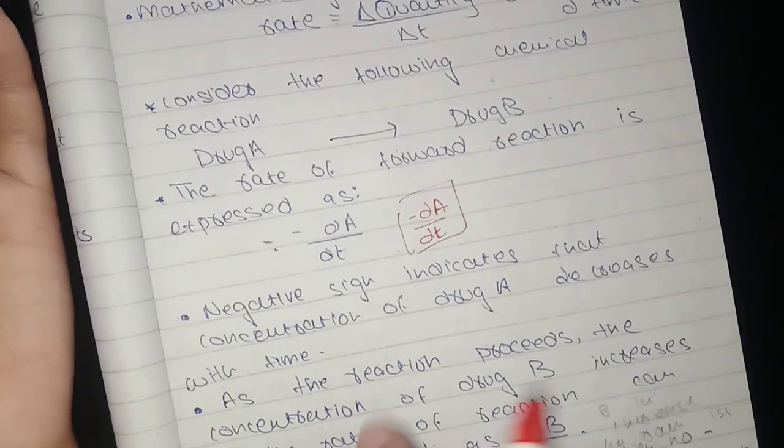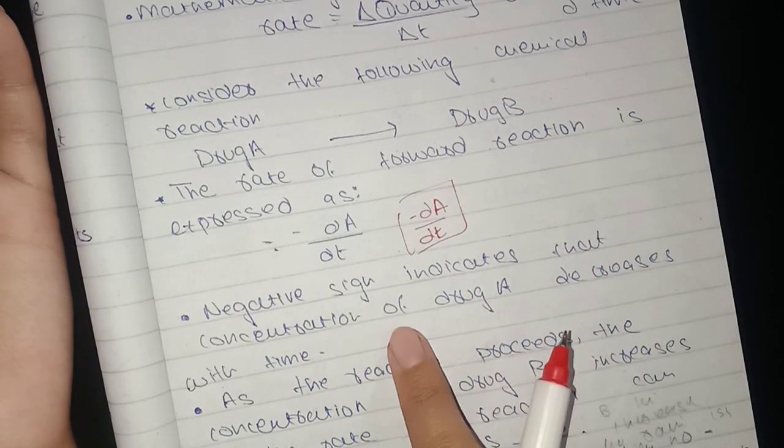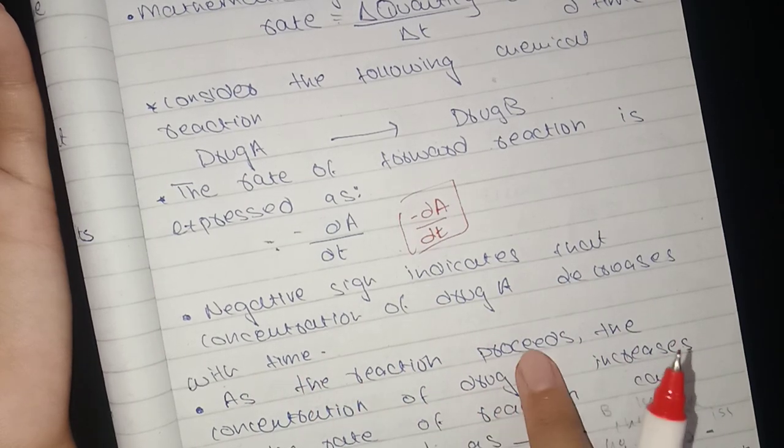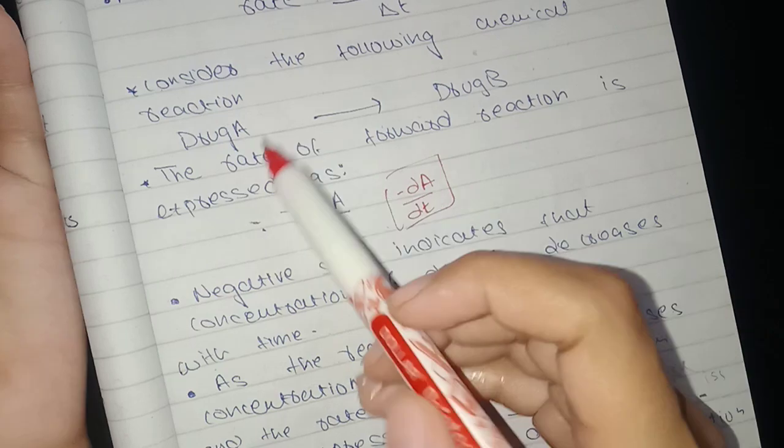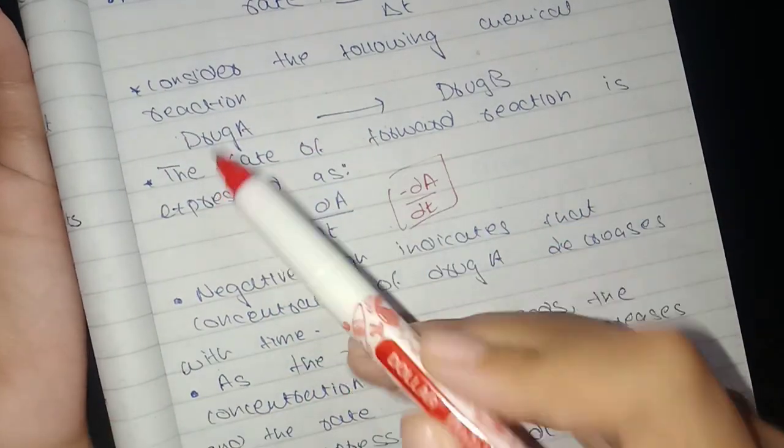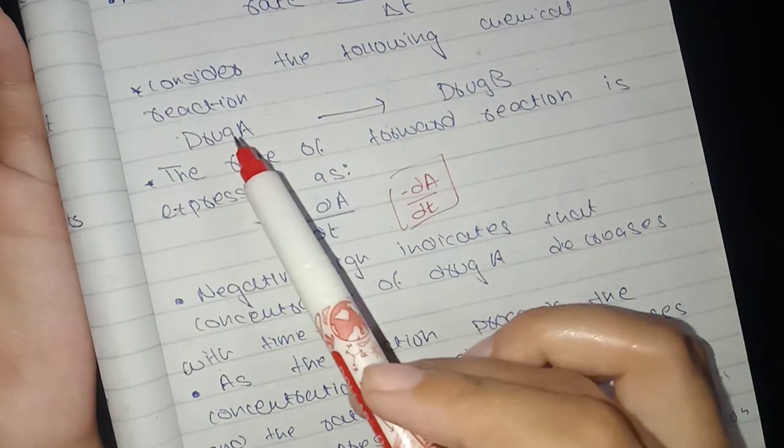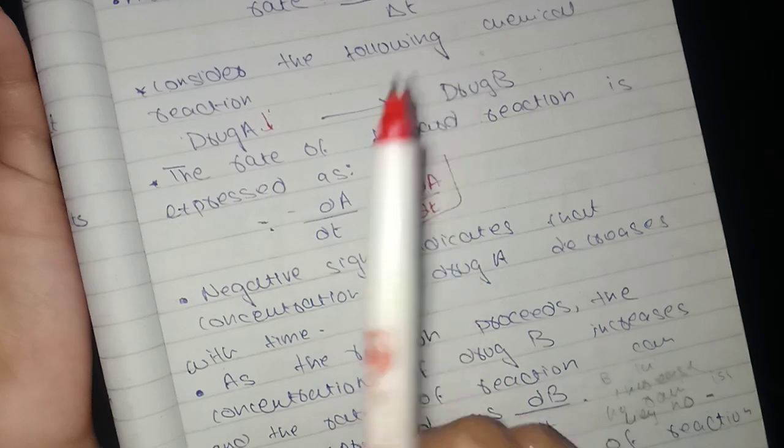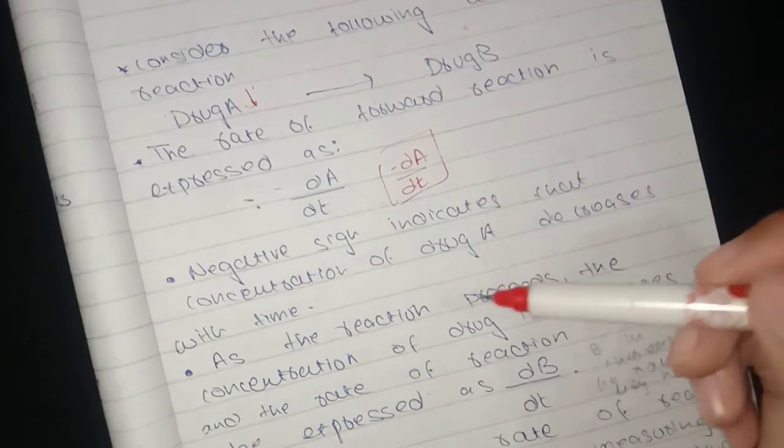The negative sign indicates that concentration of drug A decreases with respect to time. A reactant converts to another drug, so this amount is reduced with the passage of time as the reaction proceeds.